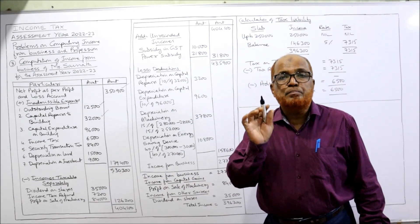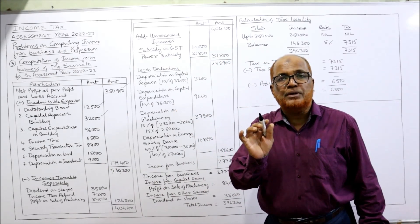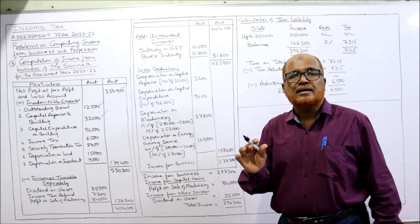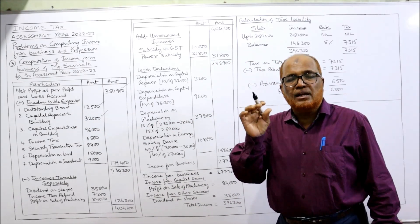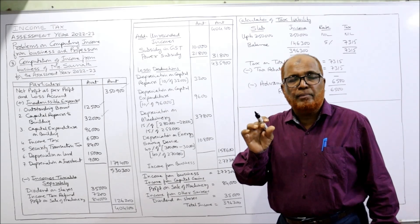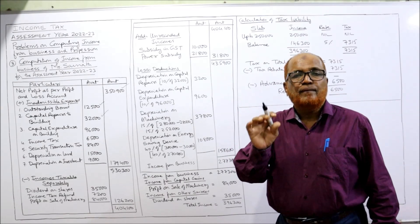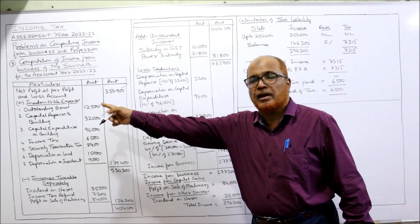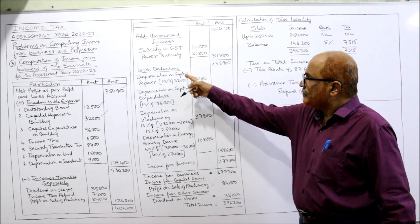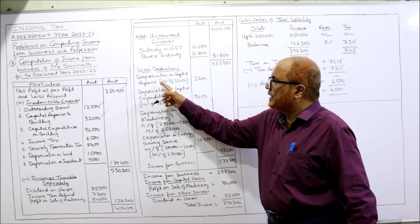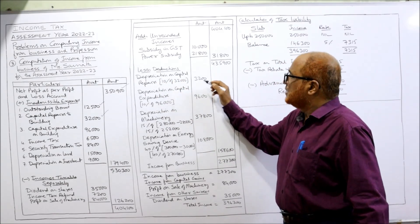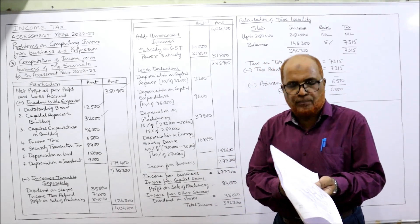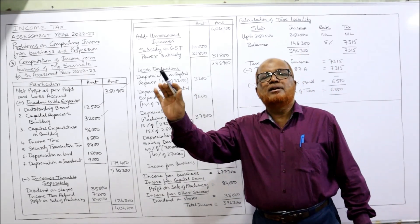However, depreciation at the rate of 10% on capital repairs is allowed. The Income Tax Act says if capital repairs are made on an own building, then depreciation at 10% on the capital repair will be allowed. So depreciation on capital repair = 10% of ₹32,000 = ₹3,200. Similarly, capital expenditure is completely disallowed whether own building or rented building, but depreciation at 10% on capital expenditure is allowed according to Income Tax rules.